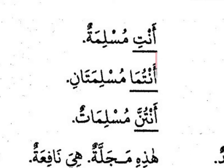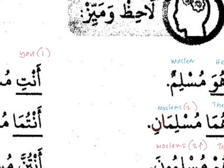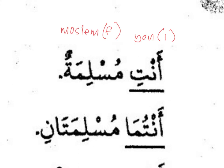Now we look at the muannath (feminine) examples. The sentence is 'anti muslimatun.' Anti means 'you' and is used for one single person. Muslima is the female version of the word muslim — because of the ta marbuta at the end, the meaning becomes female Muslim. Muslima is also singular, so the word used is anti. And since muslima is a female word, we say anti and not anta — 'anti muslima.'